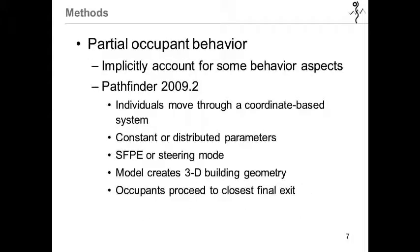Partial behavioral simulations implicitly account for some behavior aspects. For our scenarios, we used Pathfinder version 2009. Unlike the other methods, individuals were able to progress through a coordinate-based system. And as there were agents used, there are different occupant characteristics that could be assigned a constant or distributed parameters. The distributions could be either normal or uniform.